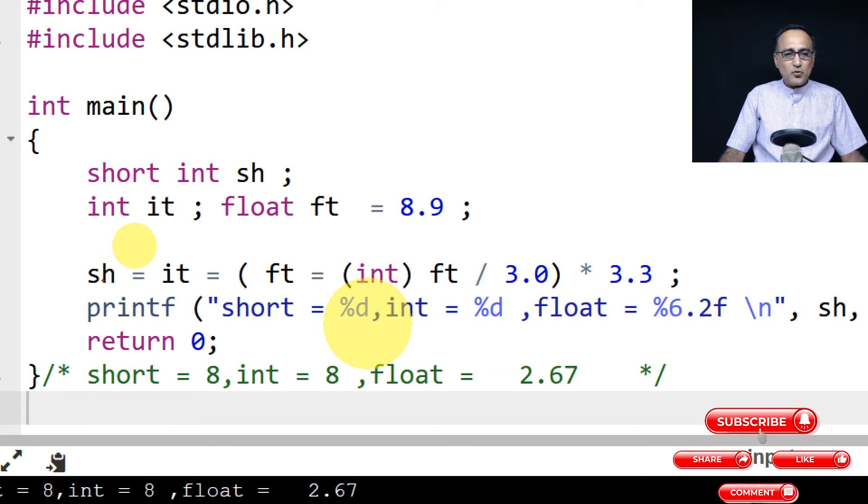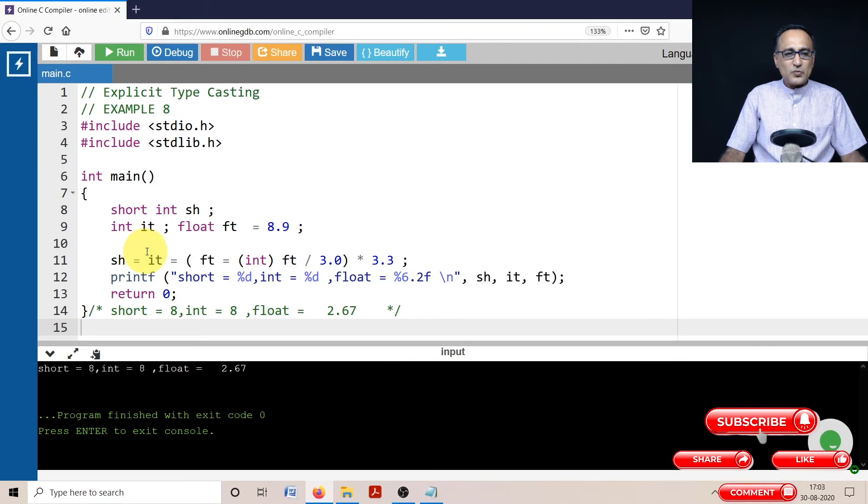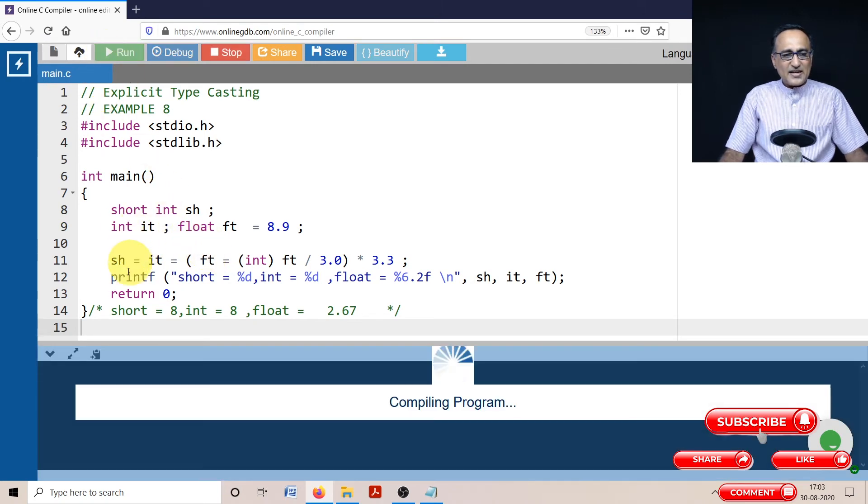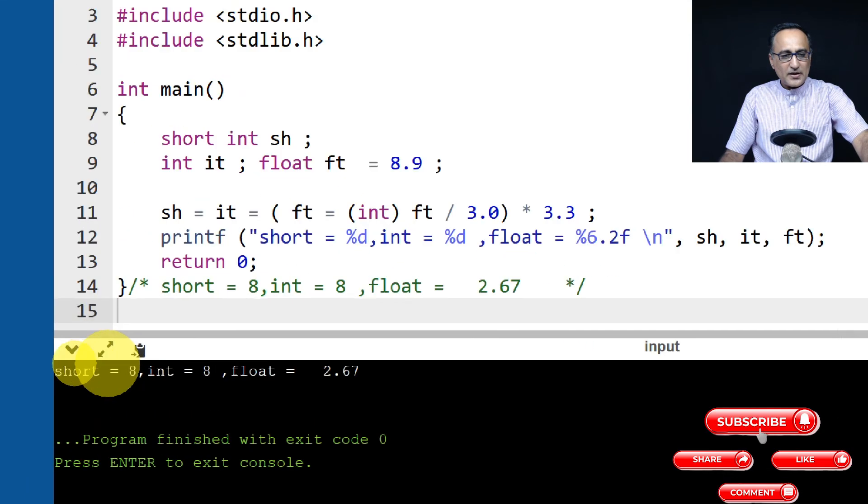So this should help you get a feel of what happens when you typecast a float to int. To test our understanding, let's try to run this particular program.